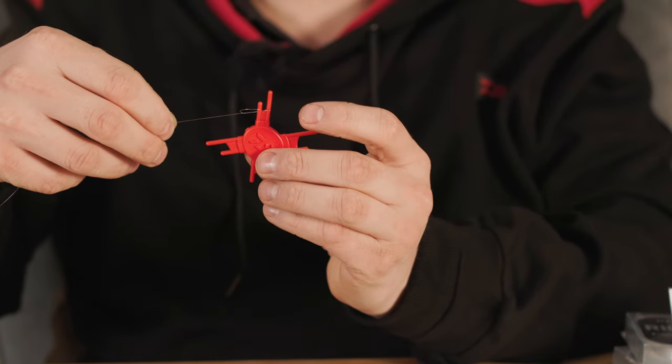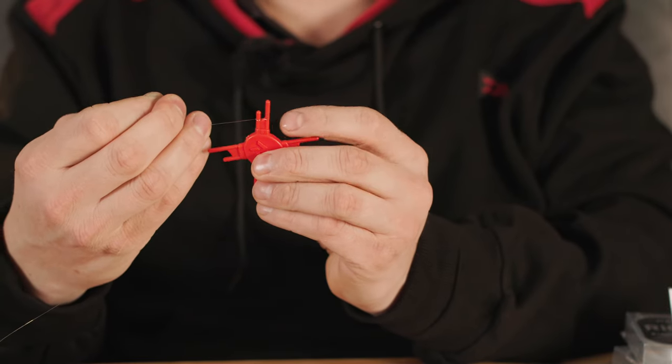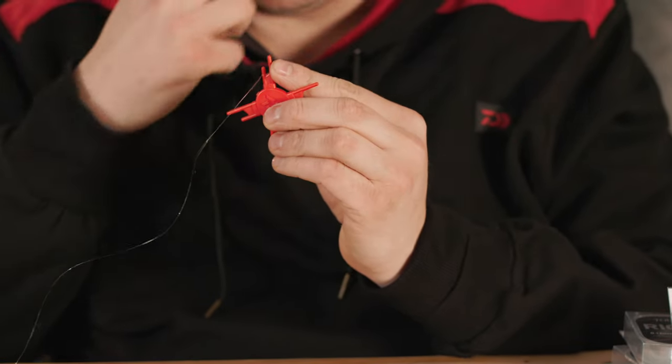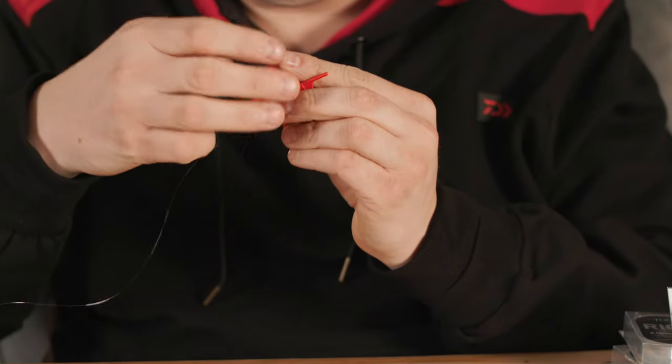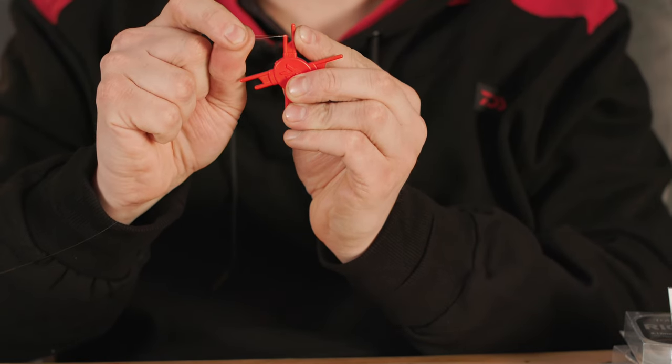I'm gradually going to pull this tight and hopefully you can see the loop goes in tight there. Then I'm just going to slide that up but before that, I'm going to wet it, moisten it and slide that over, just off the short prong, pull that tight.